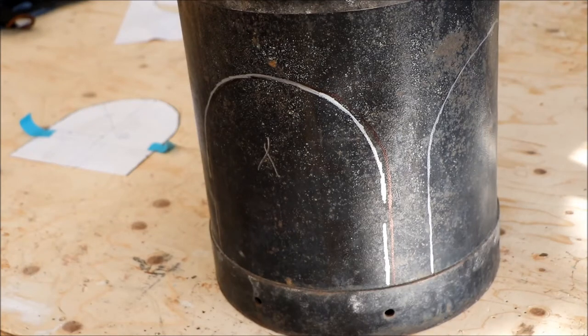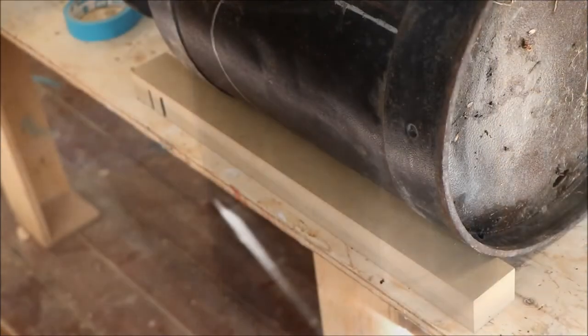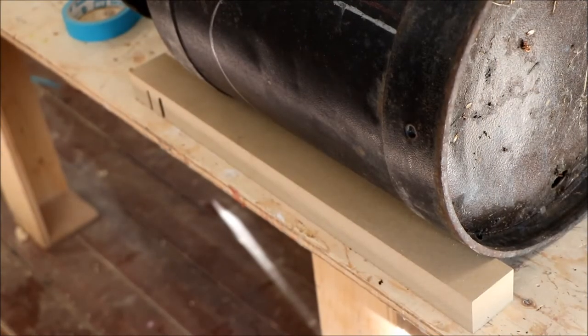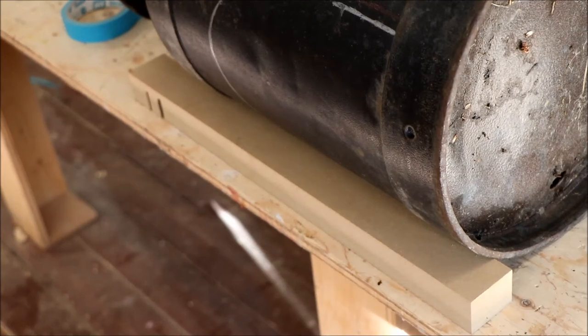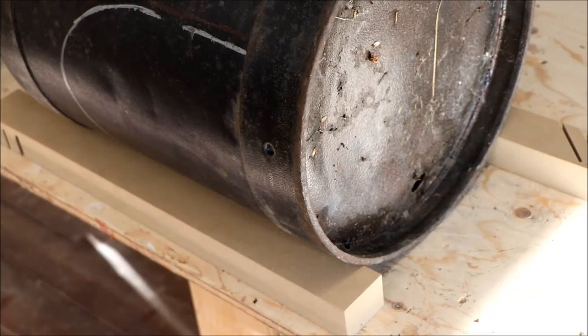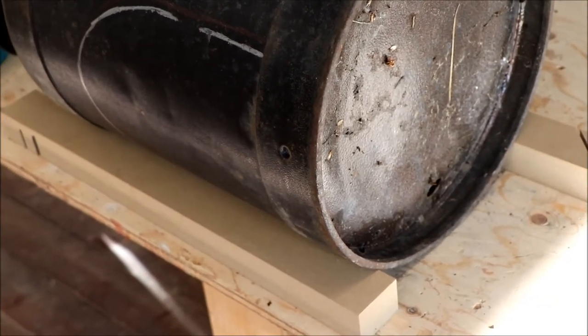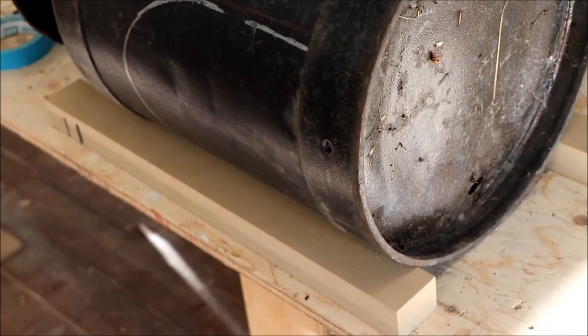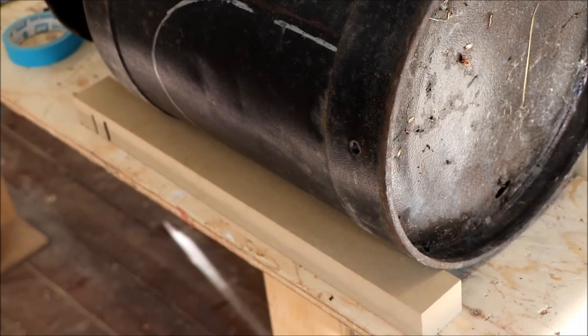I'm hoping this metal is soft enough. You can use a bi-metal blade and a jigsaw—we'll try that first, otherwise we'll have to resort to the grinder. Cutting on round objects is always a bit of a challenge, so I'm going to put two supports on either side to support it so it doesn't roll away when I'm cutting. Then we'll drill a hole and try the jigsaw first.